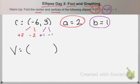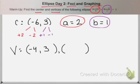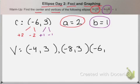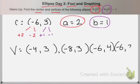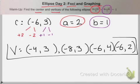So my first vertex: negative six plus two is negative four. Negative six minus two is negative eight. And then three plus one is four. And three minus one is two. So there are my four vertices.